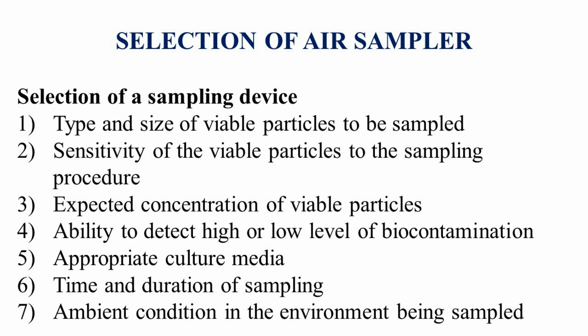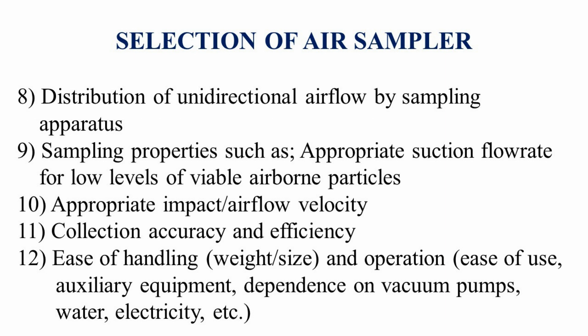Seventh is the ambient condition in the environment being sampled. The air sampler should work at ambient temperature and also in low and high temperatures. Eighth is the distribution of unidirectional air flow by the sampling apparatus. The selected air sampler should be capable of distributing air uniformly and unidirectionally; uneven distribution leads to false negative results. Ninth is sampling properties such as appropriate suction flow rate, and the sampler should have different flow rates and sampling times to help adjust volume as per biocontamination occurrence chances.